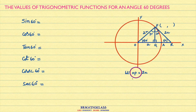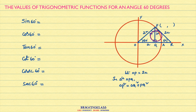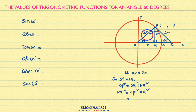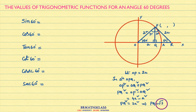Now observe triangle OPQ. It is a right-angle triangle. What is the hypotenuse? The hypotenuse is OP. From the Pythagorean theorem, hypotenuse squared equals the sum of squares of the other two sides: OP² = OQ² + PQ². We want the length of PQ. So PQ² = OP² − OQ² = (2A)² − A² = 4A² − A² = 3A². Therefore PQ = root 3 times A.